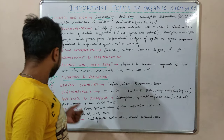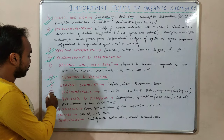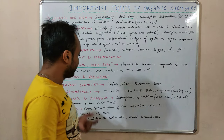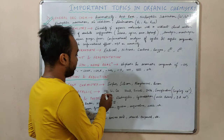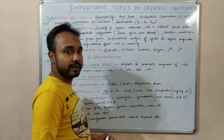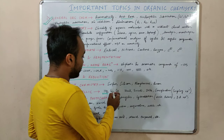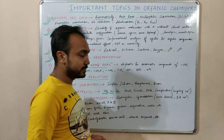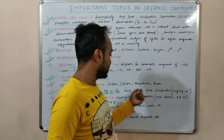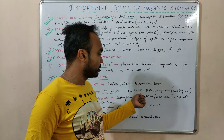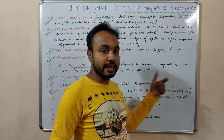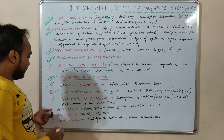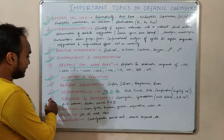Then comes organometallic chemistry. In organometallic chemistry we will talk about organomagnesium, organocopper, and Gilman reagents. Then the coupling reactions like Heck, Suzuki, Stille, Sonogashira, and Negishi reactions.